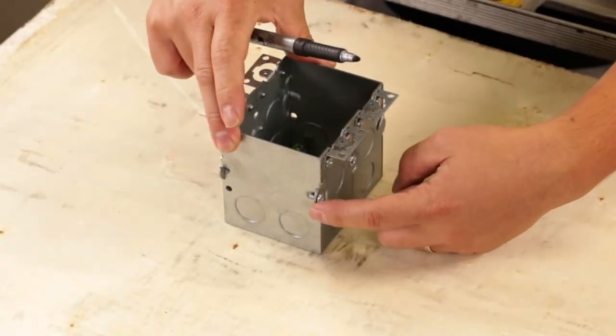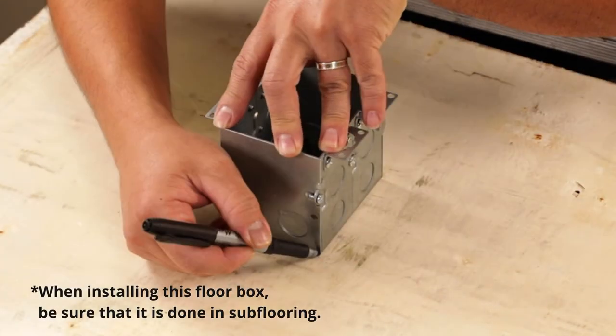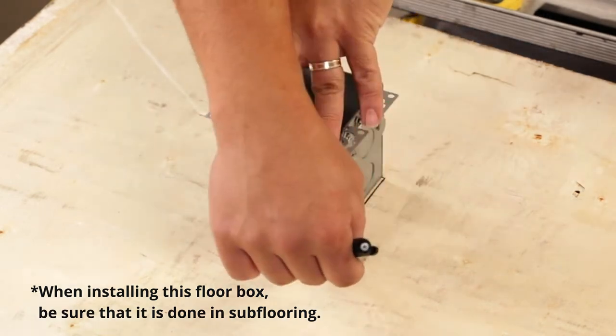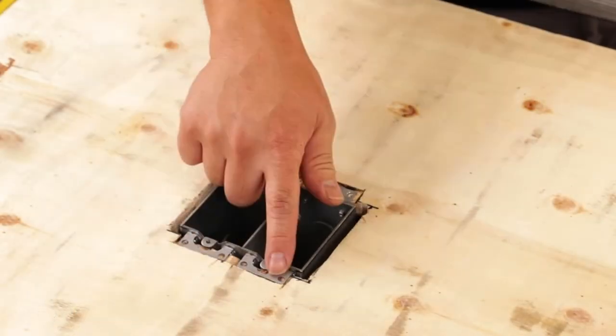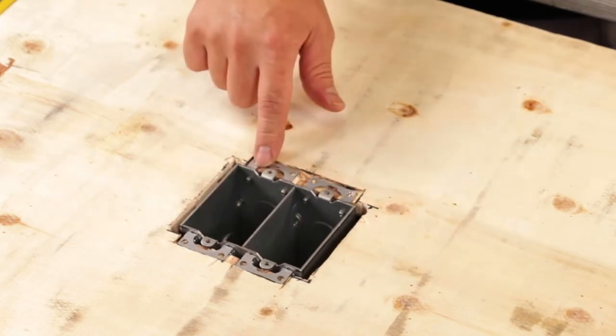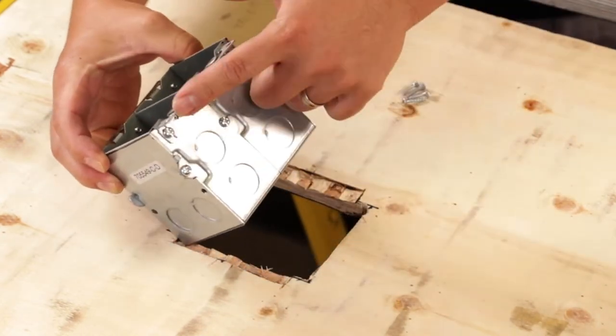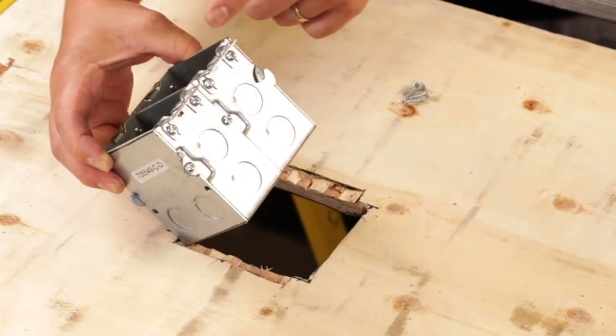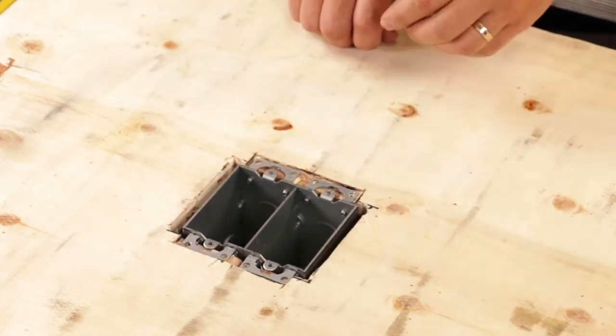To install, pick your location and trace the box, then make a cutout. Adjust the subflooring as needed to accommodate the ledges and recess the ears to the subfloor. Use the adjustable flanges for additional adjustments to make the box as flush as possible with the subflooring.